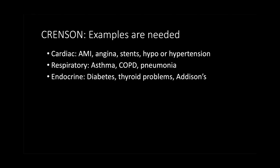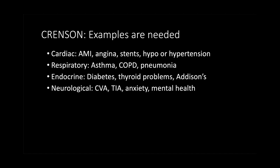E is Endocrine — that is all hormone-related. The most commonly asked question is about diabetes, but hormones are involved in a lot of things. You want to ask about diabetes, thyroid problems, Addison's disease, or any other hormonal imbalances you might be interested in. N is Neurological — ask about strokes, mini strokes (CVAs and TIAs). Remember neurological also includes psychological, so ask about mental health, which may include stress and anxiety. You have to interpret the situation and phrase those questions carefully — a more vulnerable patient requires a different approach.